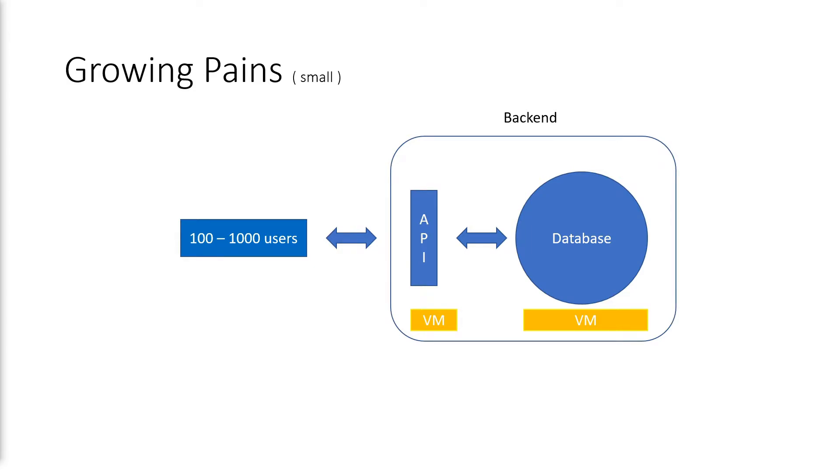And then, as a pleasant surprise, things are successful. And we have more users than our current architecture can support. So we proceed down the standard evolution of growing a backend.